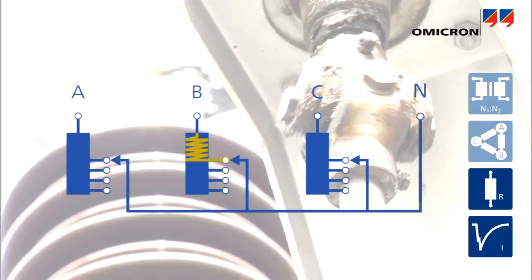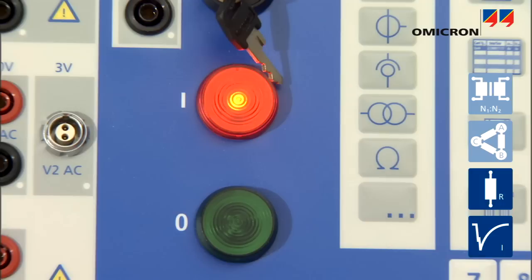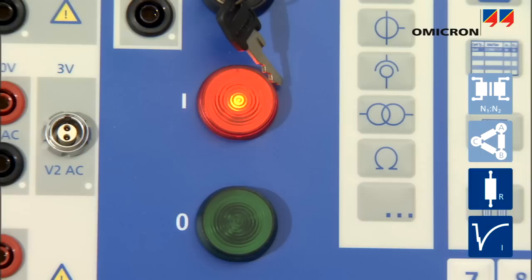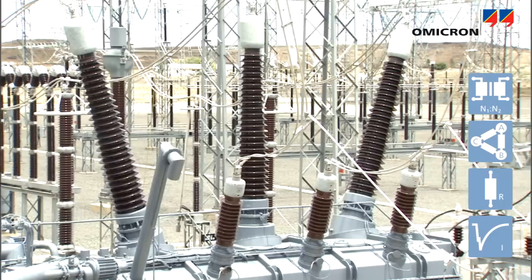Then, the winding is discharged before switching to the next phase. At the end of the last measurement, the CPC indicates that the test is finished and that it's safe to remove the test connections.